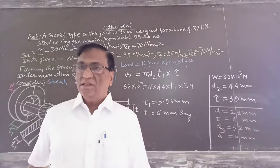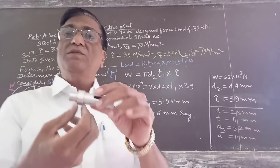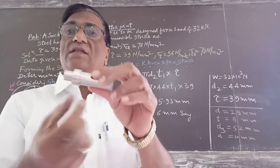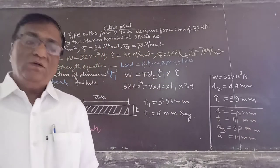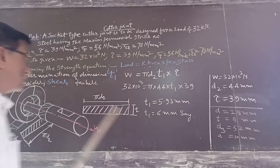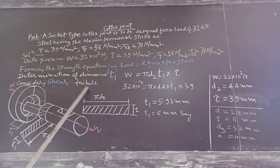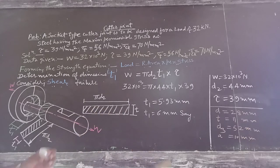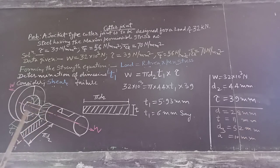Now in this session, we will study how to determine the thickness of the spigot collar — this is T1. T1 is calculated considering the shear failure of the collar, as shown in the figure.